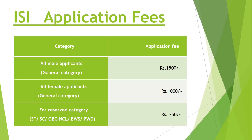ISI Application Fees: All male applicants in the general category must pay 1500 rupees. All female applicants in the general category must pay 1000 rupees. For reserved categories including SC, ST, OBC-NCL, EWS, and PwD, the fee is 750 rupees.